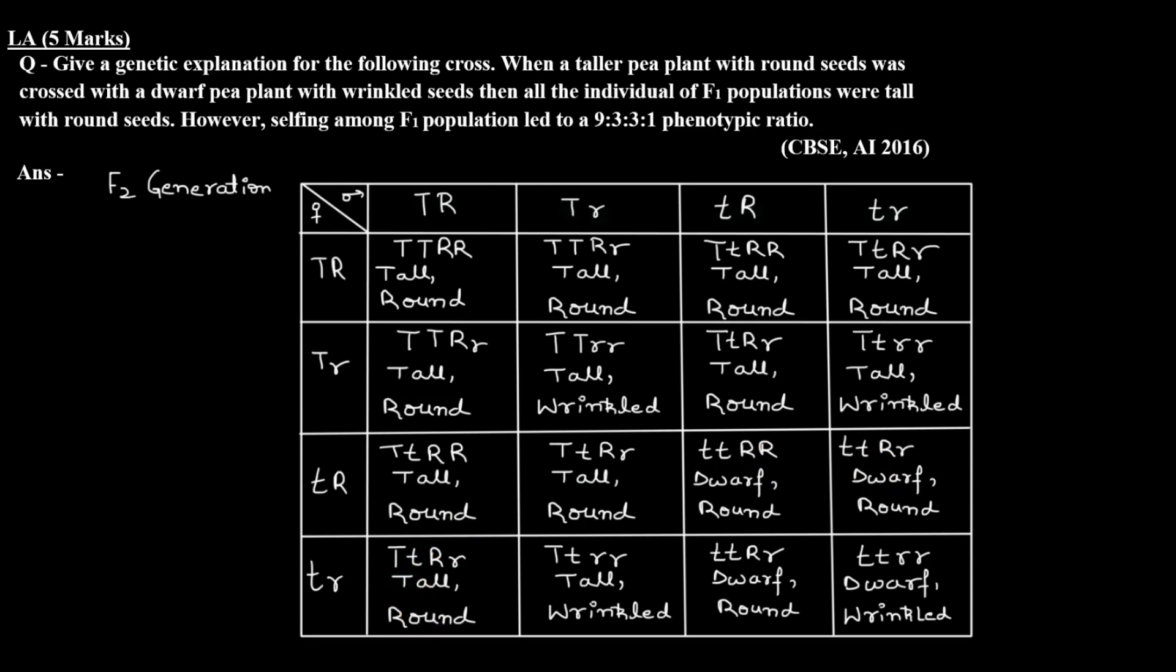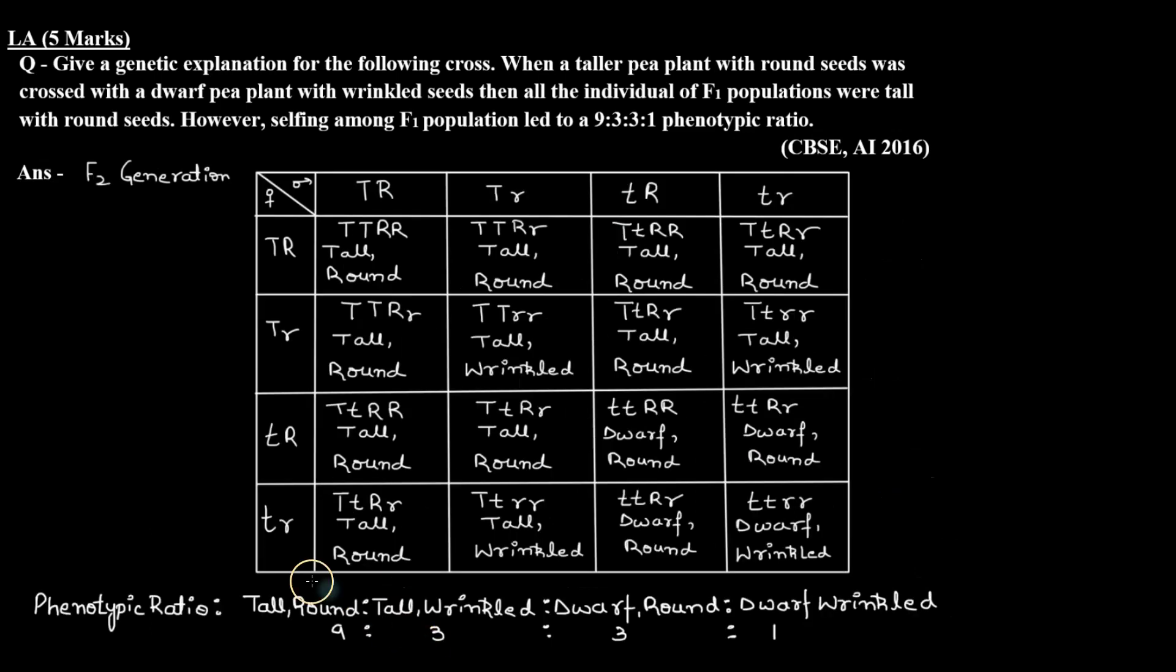If we look at phenotypic ratio, then we have a phenotypic ratio that is tall round to tall wrinkled to dwarf round to dwarf wrinkled, 9:3:3:1.